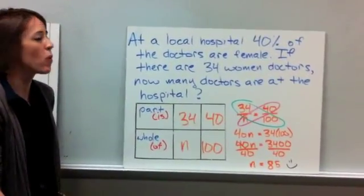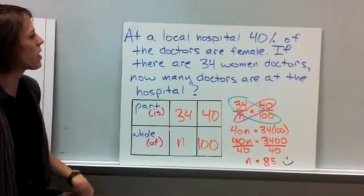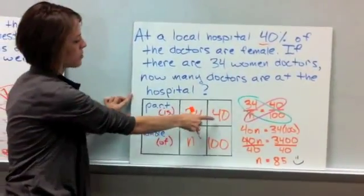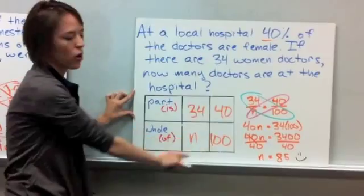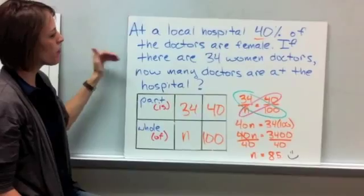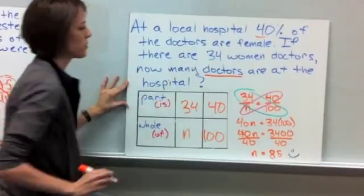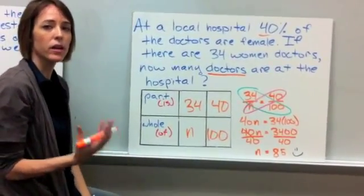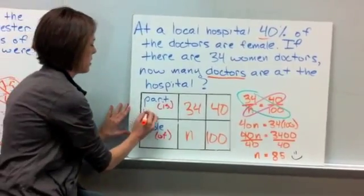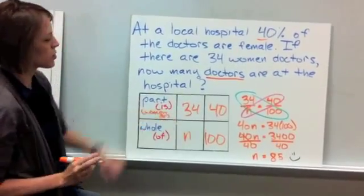So you should have done number four. Let's go ahead and check our answer. So what they're saying is that at the local hospital, 40% of the doctors are female. So we know that 40% can be written as 40 out of 100. 100 is our whole of the percent, and then 40 is our part. Then they're saying that if there are 34 women doctors, how many total doctors are at the hospital? So we don't know how many are there in total, so that's going to be our variable of N. And we know that the part is the women doctors. So that's 34.